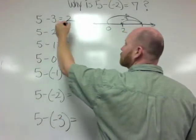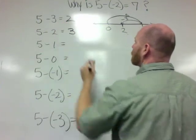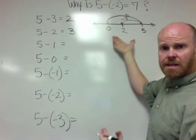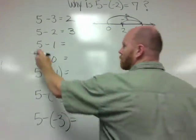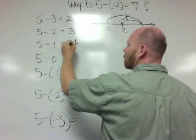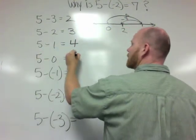So 5 minus 2 is 3. We're not going to draw a number line, but we could, and we would see that the answer really was 3. So 5 minus 1 is 4. 5 minus 0 is 5.